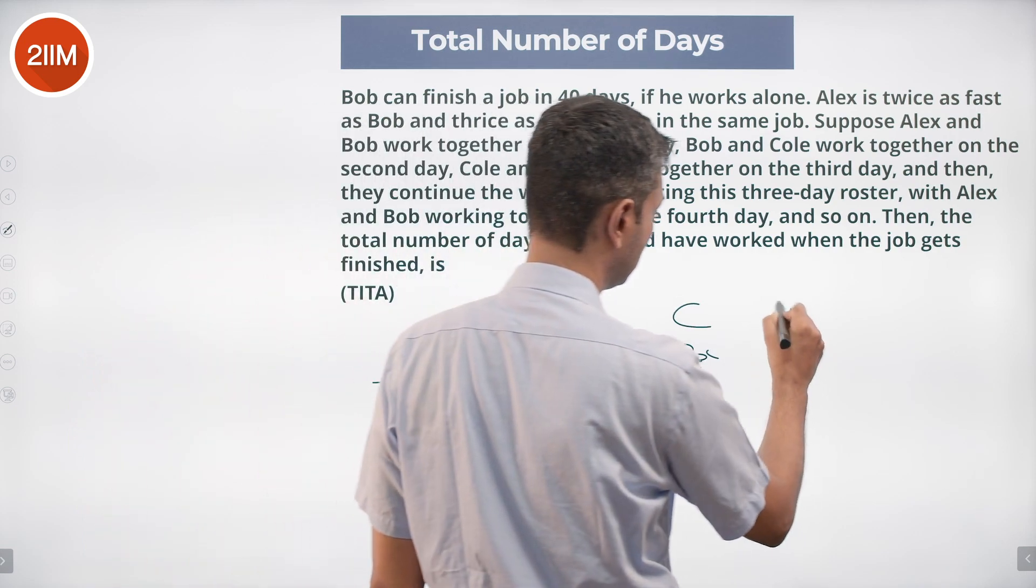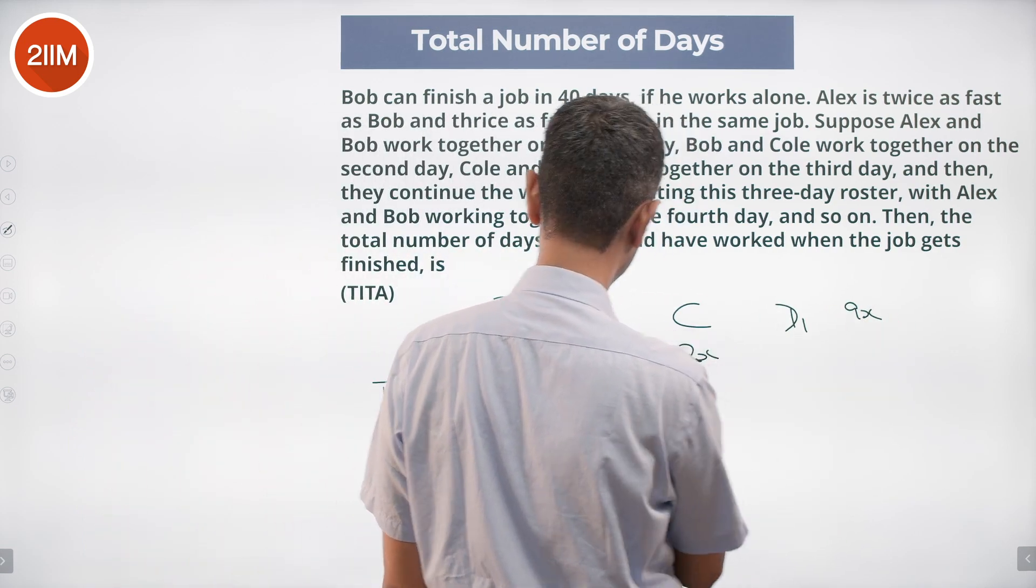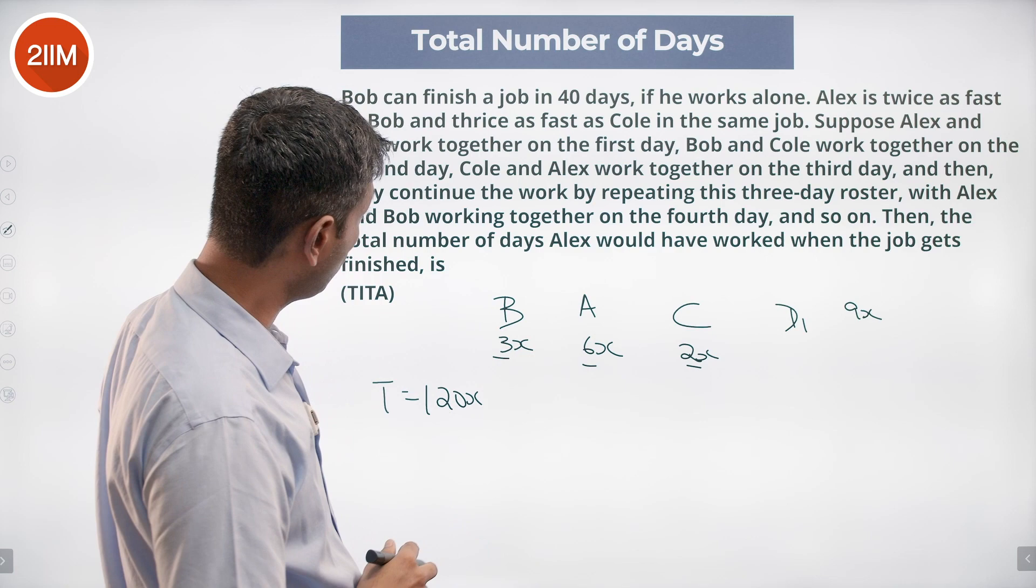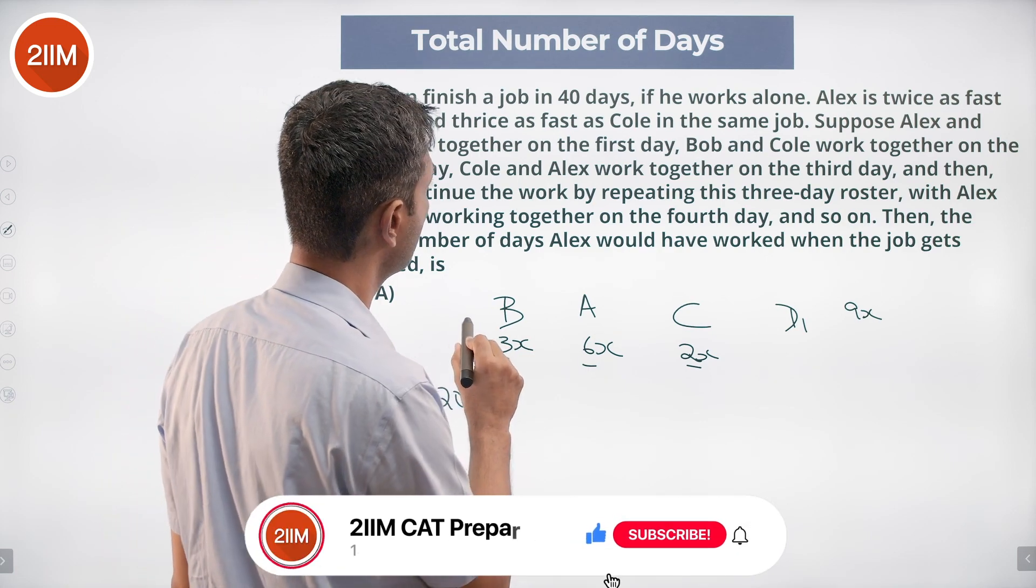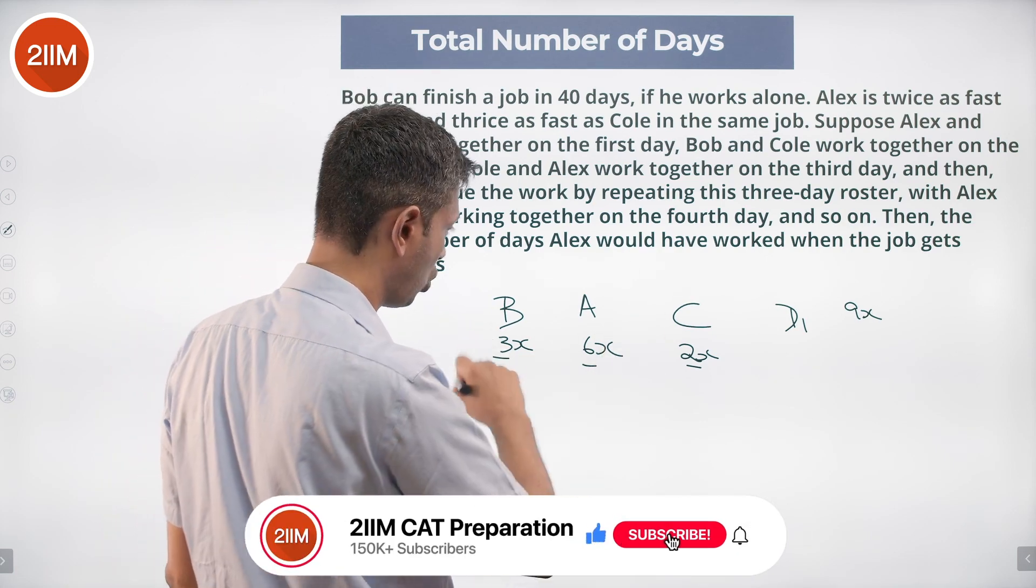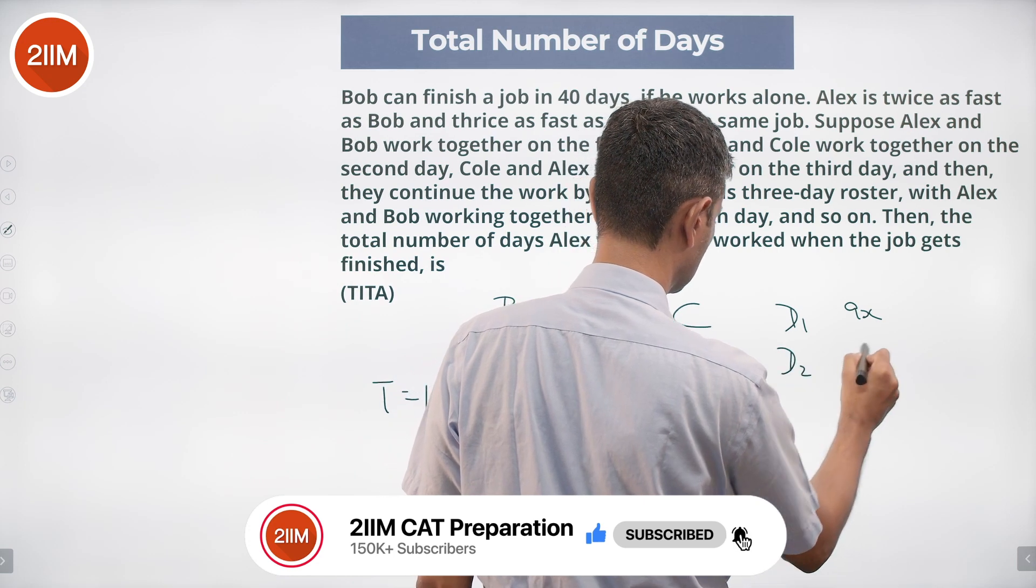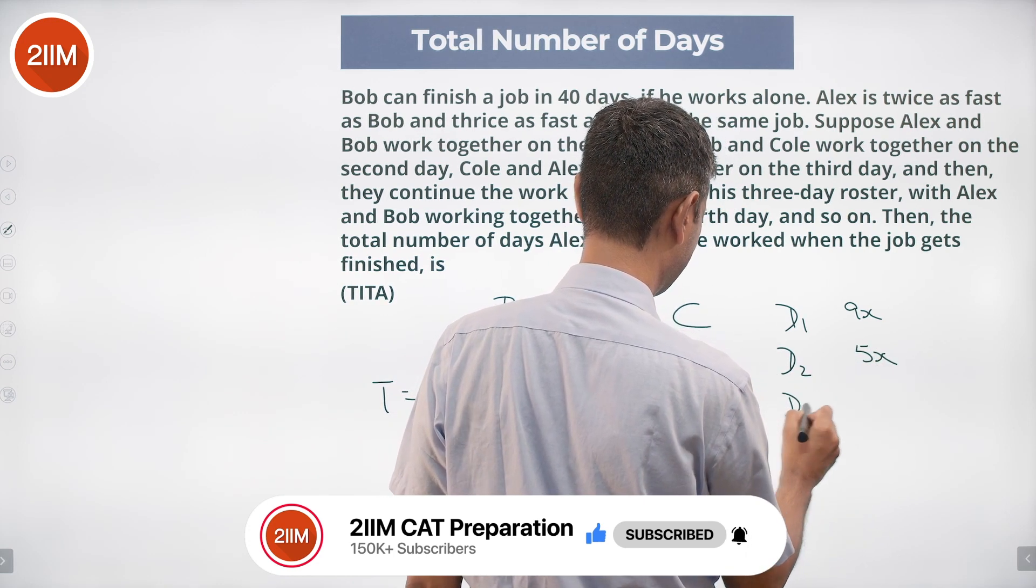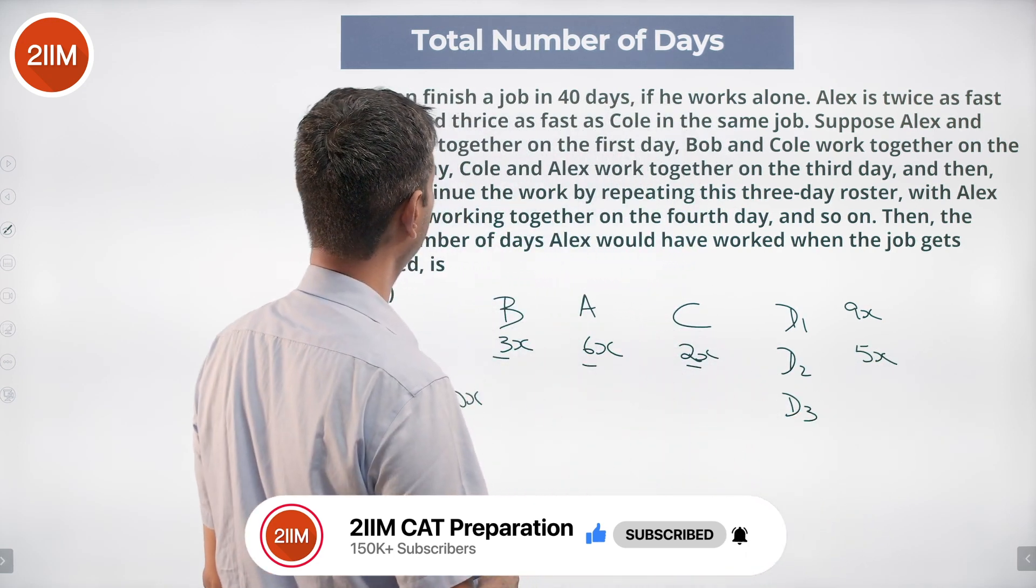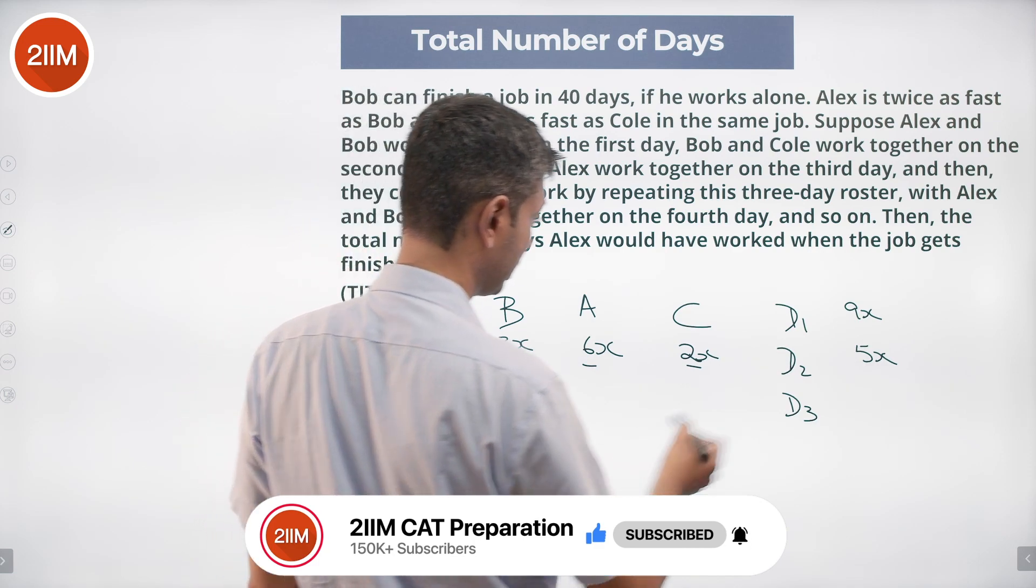On day 1, we get 9x. First we have Alex and Bob, then Bob and Cole, and then Cole and Alex. Bob and Cole, that is day 2, is 5x. Then day 3 is Cole and Alex work together, that is 8x.